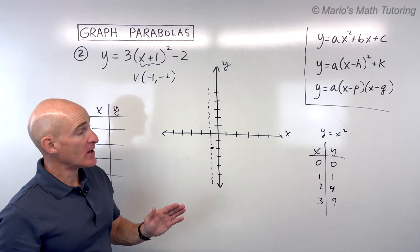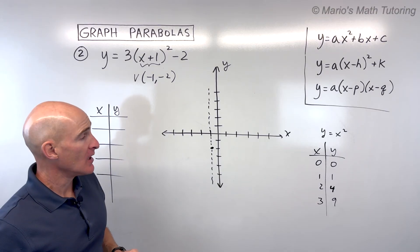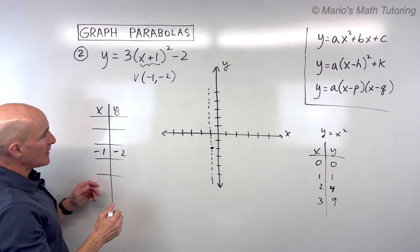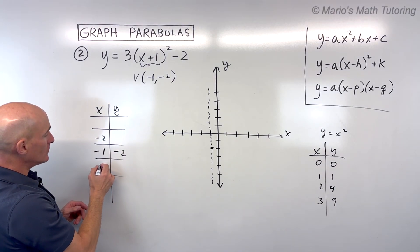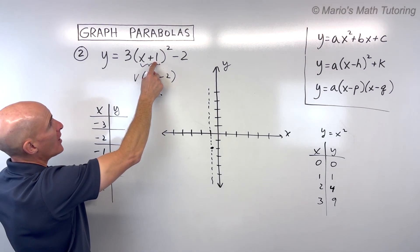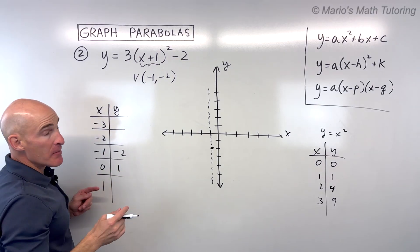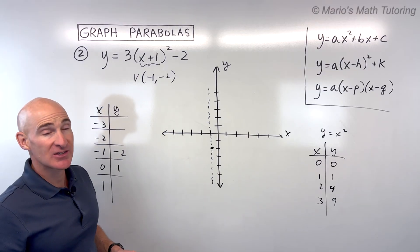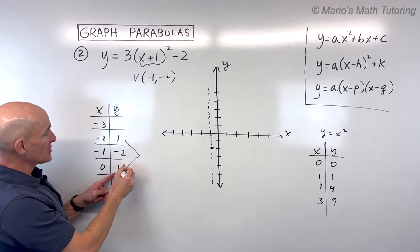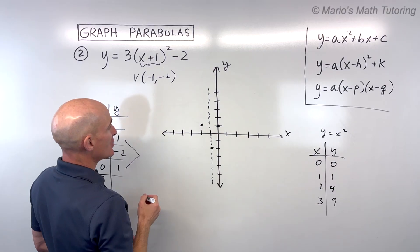And what we can do now is pick some points on either side of that axis of symmetry and fold it over to get an additional point. So we can put this vertex in the middle of our table. This is one way to do it. Pick some points on either side, maybe negative 2 and 0, or negative 3 and 1. If we plug in 0, we've got 0 plus 1 is 1. 1 squared is 1 times 3 is 3 minus 2 is 1. Make sure to follow that PEMDAS, that order of operations. Otherwise, you'll get a different answer. But if this is 1, this is also 1 because it's symmetric. So let's plot that. So 0, 1 would be right here. Fold it over the line of symmetry. There's another point.